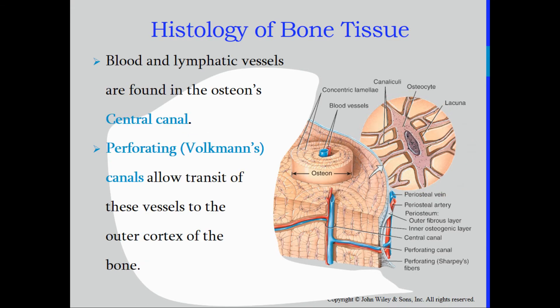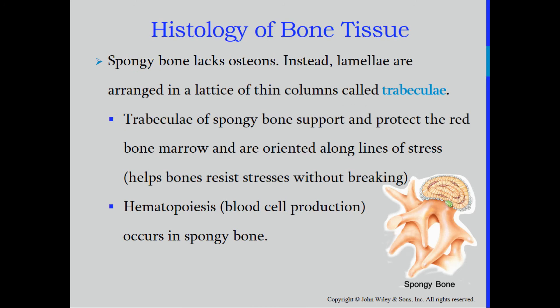Blood and lymphatic vessels are found in the osteons. Each osteon has a central canal — also called the Haversian canal — where blood vessels run through the bone. The perforating, or Volkmann's, canals allow transit of these vessels to the outer cortex of the bone, allowing blood supply to reach the outside layer — the periosteum, the outer covering of the bone.